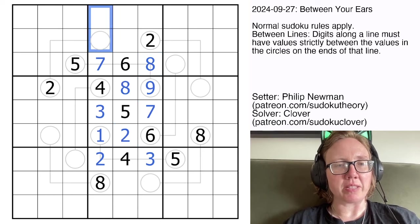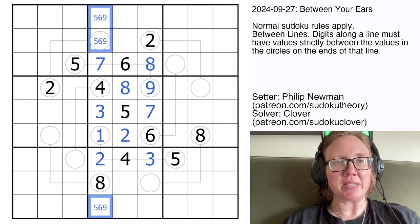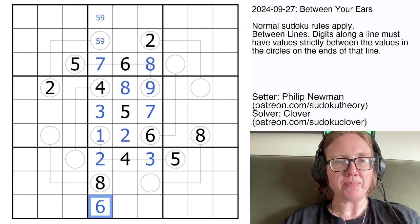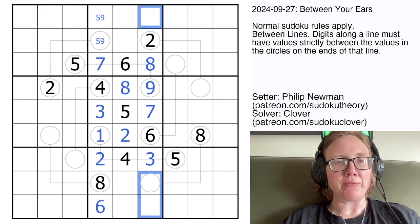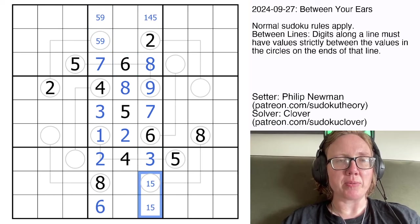Now if we look at these columns that are nearly complete, this will have to contain 5, 6, and 9, but there's a 6 in the region, so we're going to place a 6 right there. These will have to contain 1, 4, and 5. There's a 4 in this region, so we're going to place a 4 up here.